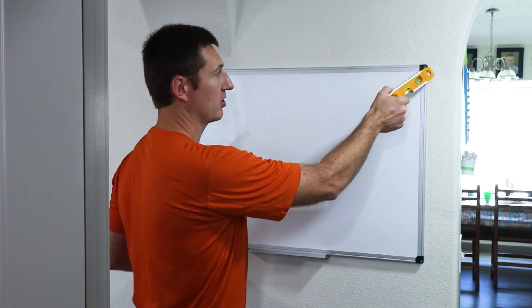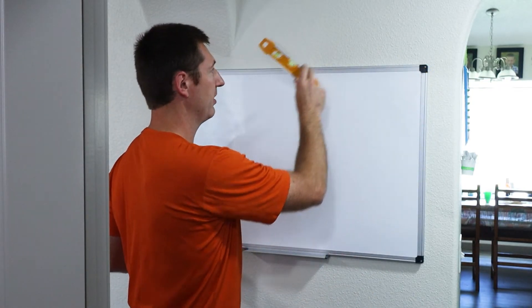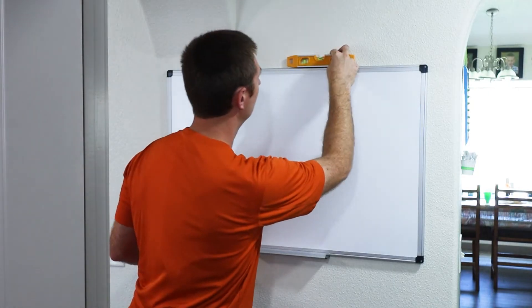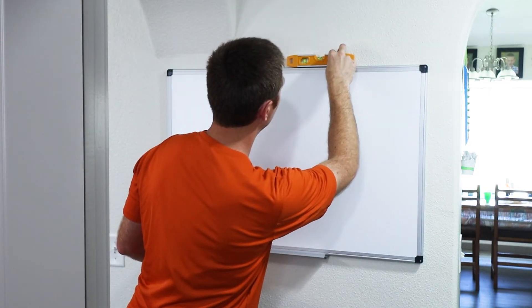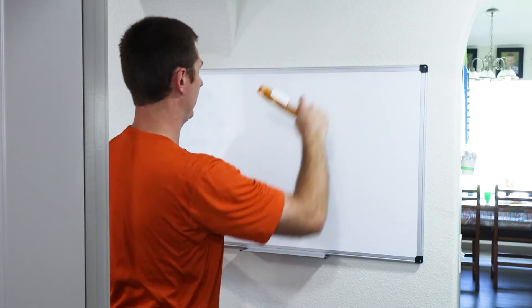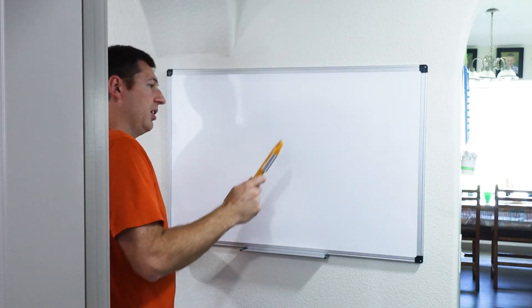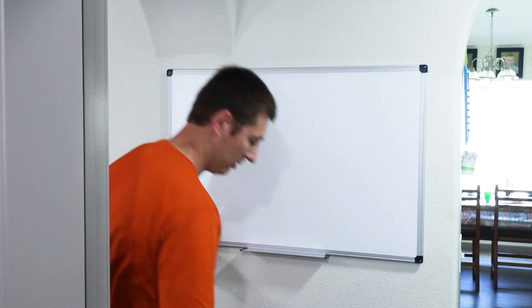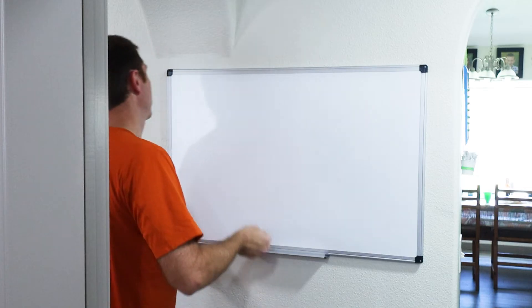Alright, with our top right screw in we're ready to put our top left screw in. Let's check level. See how we look. Let me come up a little bit. Okay, we're good there. We want to make sure we're holding it against the wall so we can put our next screw in.